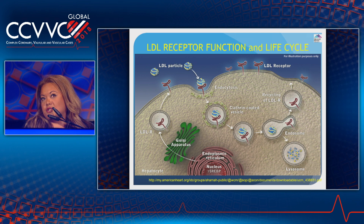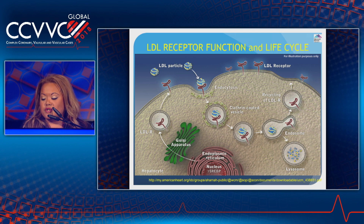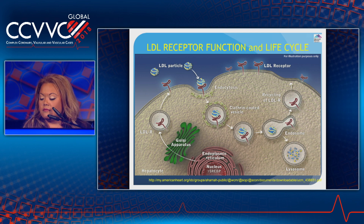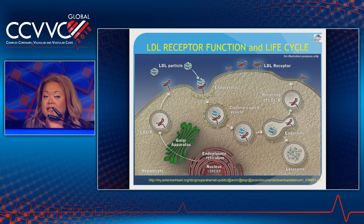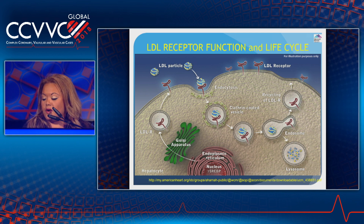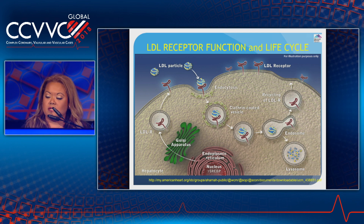Before we can discuss PCSK9 inhibition, we must first understand LDL receptor function. One of the pivotal factors in LDL metabolism is the LDL receptor, by virtue of its capacity to bind and subsequently clear cholesterol derived from circulating LDL. A complex of LDL-C, LDL-R, and PCSK9 are internalized into clathrin-coated pits and subsequently undergo lysosomal degradation. The LDL-R is then recycled back to the plasma membrane, where it can bind more LDL. This internalization and reshuttling of the receptor toward the plasma membrane is a continuous process which can occur up to 150 times in a life cycle.